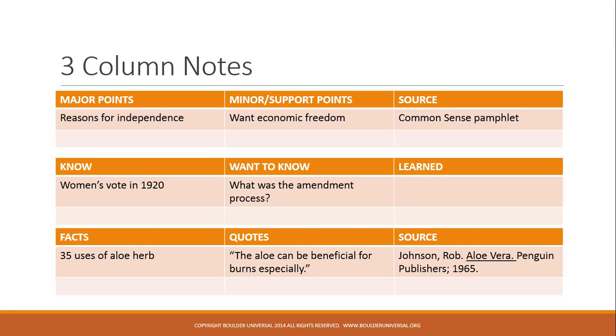If you look in the center of the screen here, you'll see a second type of three column note taking, and what we have here is the KWL chart. This is where on the left you put down what you know about a particular topic, in the middle you write down what you want to know about a particular topic, and then on the far right you will write down what you've learned. So the KWL chart is fantastic for demonstrating your learning process as you're going through it. As an example, I know that women in America got the vote in 1920, but what I want to know is what was that amendment process. So you'll notice here that on the right I have my learned box, which is open, and as I learn about this process, I would fill in information in that learned box.